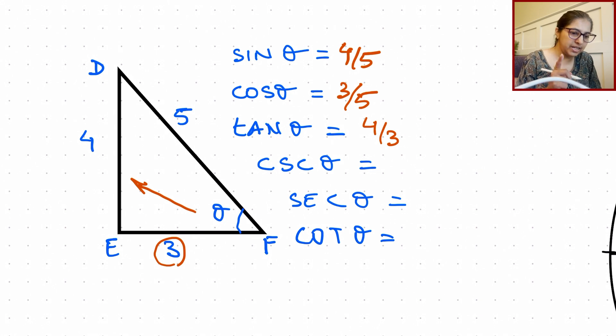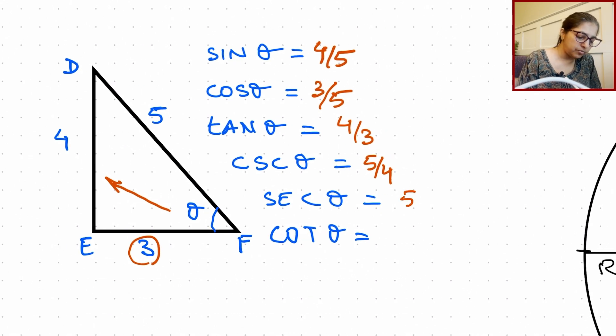Now, follow me. Cosecant is the reciprocal of sine, so that is going to be 5 over 4. Secant is reciprocal of cosine, which is going to be 5 over 3. And cotangent is reciprocal of the tangent, so this will be 3 over 4.